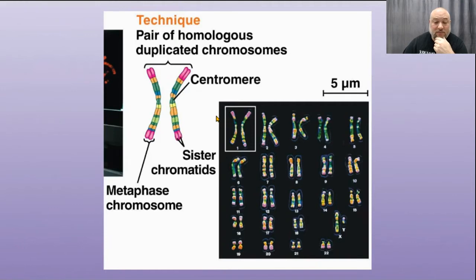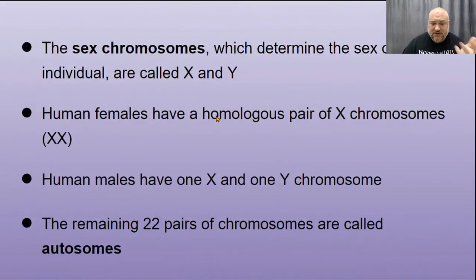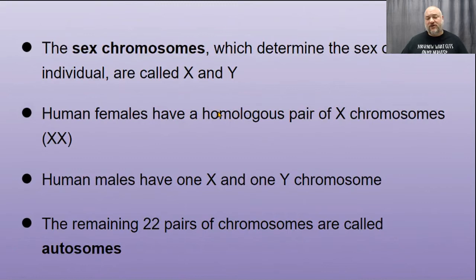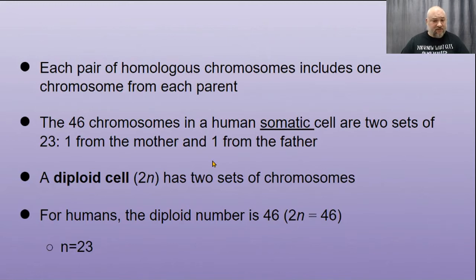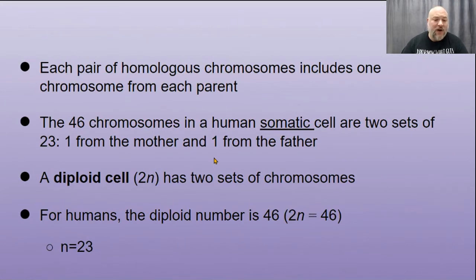The sex chromosomes are XX in females and XY in males. The other 22 pairs are called autosomes and are the same in every individual regardless of sex. Each pair of homologous chromosomes includes one chromosome from each parent. The 46 chromosomes in a human cell are two sets of 23 — one from mom and one from dad — making it a diploid cell, or 2n: 46 chromosomes.